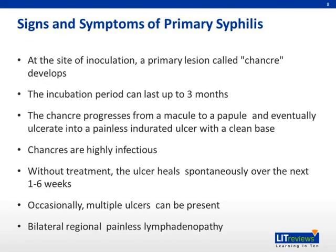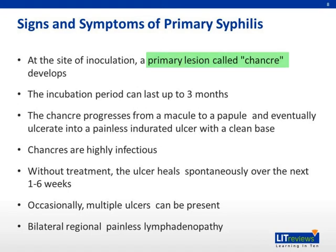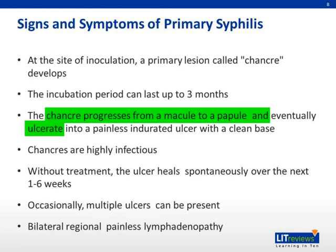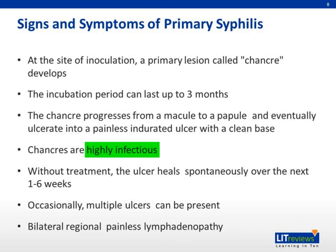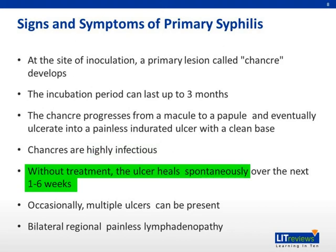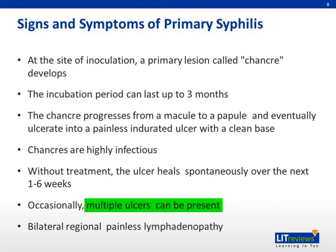At the site of inoculation, a primary lesion called a chancre develops after infection. The chancre progresses from a macule to a papule and finally to an ulcer. It is classically described as a painless, indurated ulcer with a clean base. This lesion is highly infectious. Over a course of one to six weeks, the lesion heals spontaneously even without any treatment. Occasionally, multiple lesions may be present.